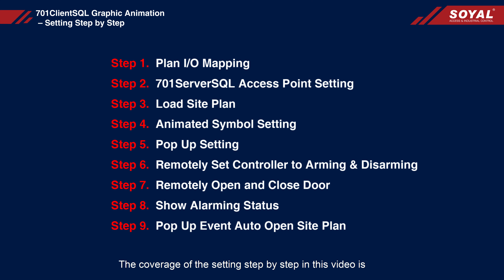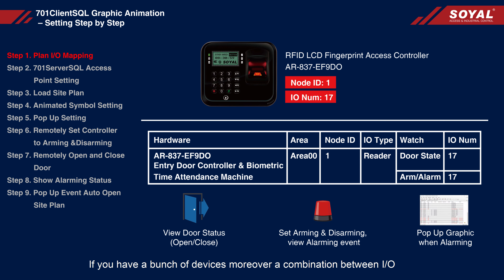The coverage of the settings step-by-step in this video is: Step 1, Plan I/O mapping; Step 2, 701 server SQL access point setting; Step 3, Load site plan; Step 4, Animated symbol setting; Step 5, Pop-up setting. From Step 6 to Step 9 will be the real test: Step 6, Remotely set access controller to arming or disarming; Step 7, Remotely open or close door; Step 8, Show alarming status; Step 9, Pop-up event auto-open site plan.